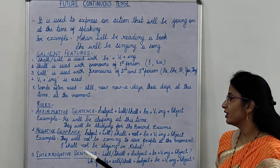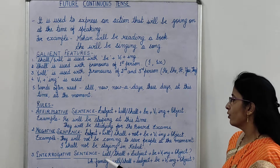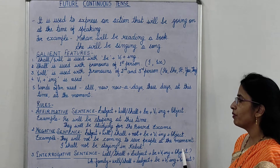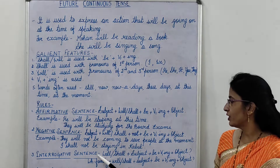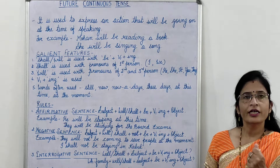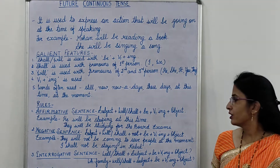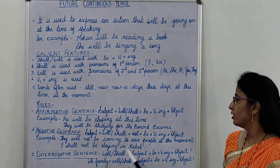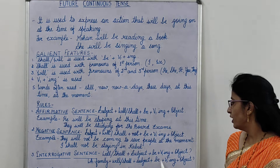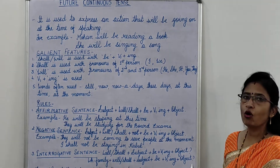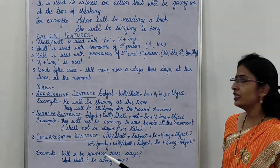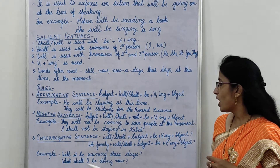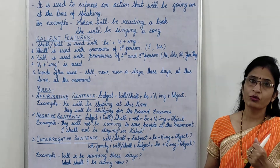Now we come on to interrogative sentence, which are also questioning sentences. The rule is: will or shall plus subject plus be plus first form of verb plus ing plus object. The second rule for interrogative sentence is the wh-family. Wh-family stands for questioning words starting with wh, such as what, why, which, when. WH family plus will or shall plus subject plus be plus first form of verb plus ing plus object. For example, will it be raining these days? क्या इन दिनों वर्षा हो रही होगी? What shall I be doing now? मैं अब क्या कर रही होऊंगी?